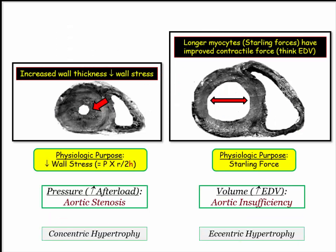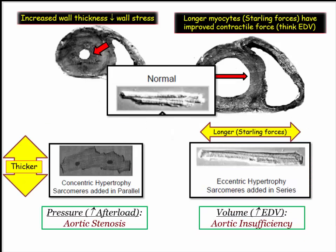Both are adaptive responses. Concentric hypertrophy is an adaptive response to increased afterload, while eccentric hypertrophy is the adaptive response to volume overload — ventricular compliance increases to accommodate the volume. In both instances, the goal is to maintain cardiac output. Be familiar with the concept that sarcomeres are added in parallel with concentric hypertrophy versus being added in series with eccentric hypertrophy. The longer sarcomeres in eccentric hypertrophy reflect the Starling forces associated with increased end-diastolic volume. This distinction is easy test fodder for the NBME.